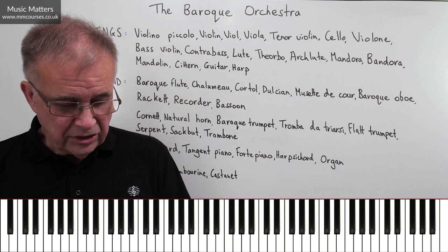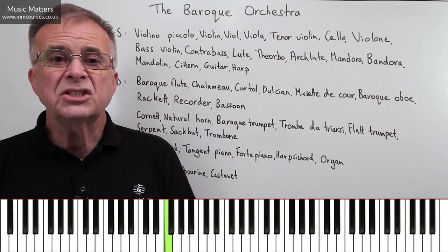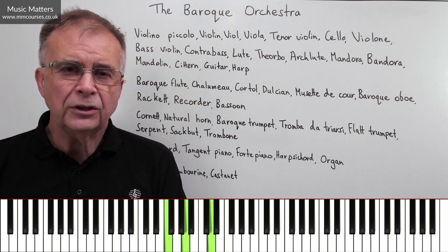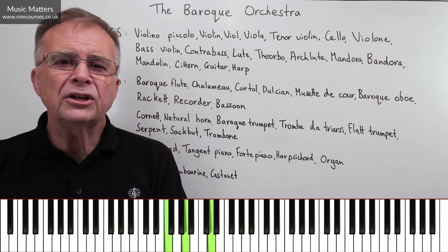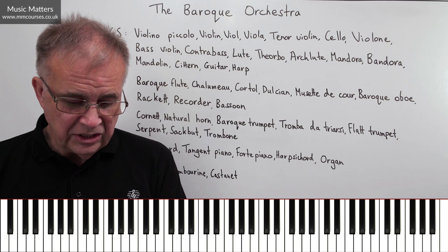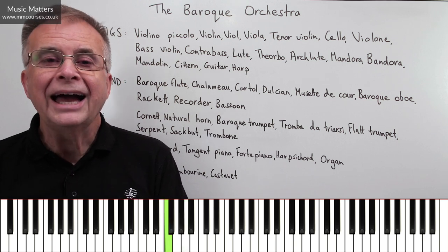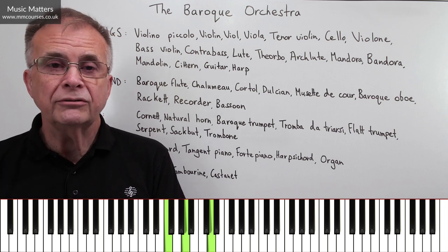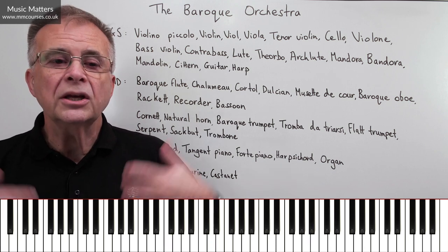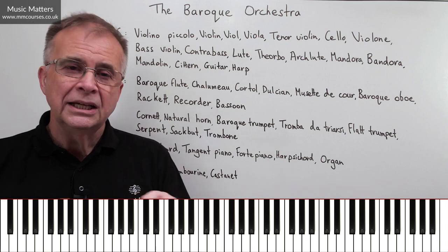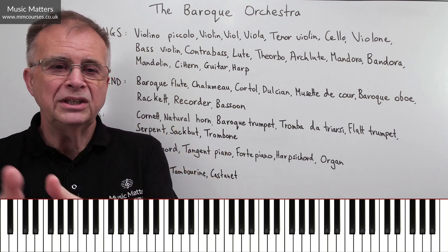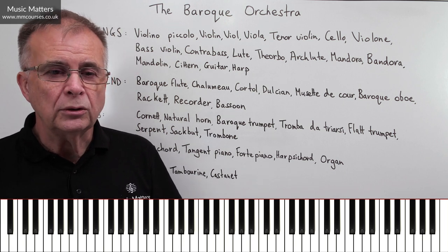Then you might have another bass note: F, and it says 6-3. So what's six above F? That's D. What's three above F? That's A. So you've got a D minor chord in first inversion — F-A-D — with F in the bass. You take those notes and can organise them any way you want, as long as you've still got that F in the bass line. This is how basso continuo worked: the keyboard player could improvise their own part as long as it complied with these numbers, with the bass line doubled by the cello or bassoon.